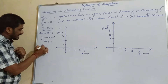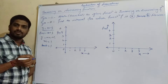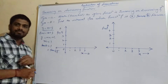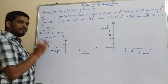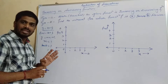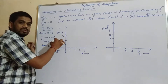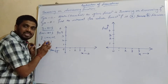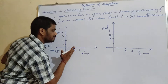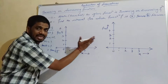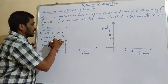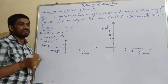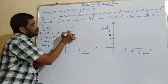Which means tan theta equal to 1, so tan 45. For a 45-degree angle, the slope is 1. Which means the line will make a 45-degree angle with the x-axis. So the equation of this line will make a 45-degree angle.